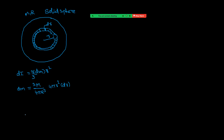Let us now substitute this into the expression and integrate. That is I = ∫(2/3) dm·r². After cancellation, we get 3M/R³ remaining. So the integrand becomes (2/3)·(3M/R³)·r²·r²·dr. We integrate from r = 0 to capital R.